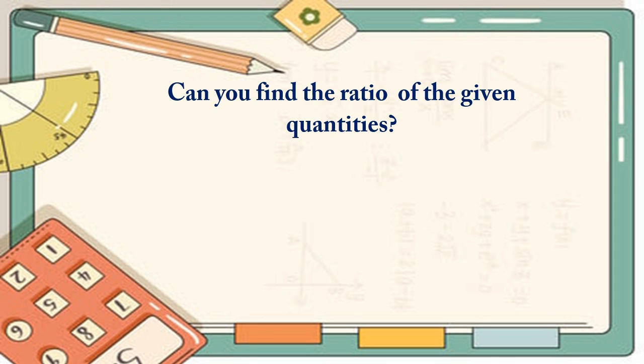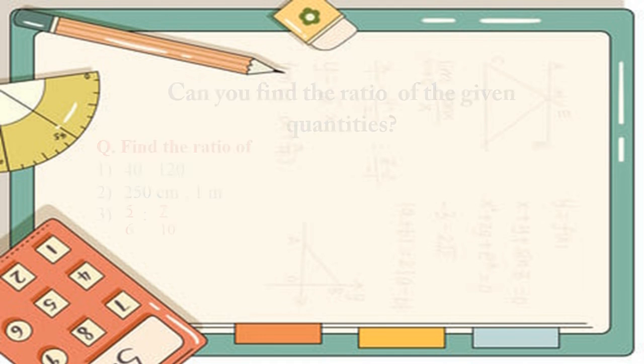Now here is a quiz for you. Can you find a ratio of the given quantities? You have to find a ratio of 40 to 120, 250 cm to 1 meter, and 5/6 to 7/10. Good luck and thank you.